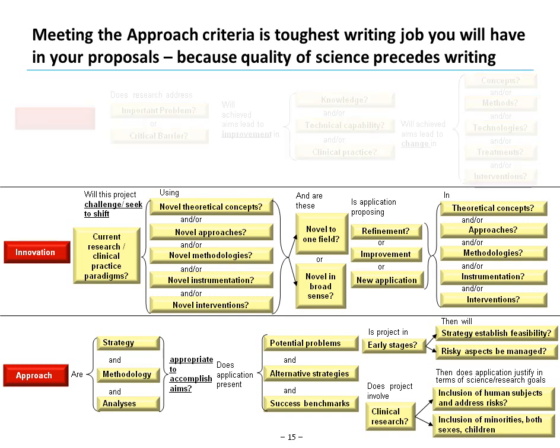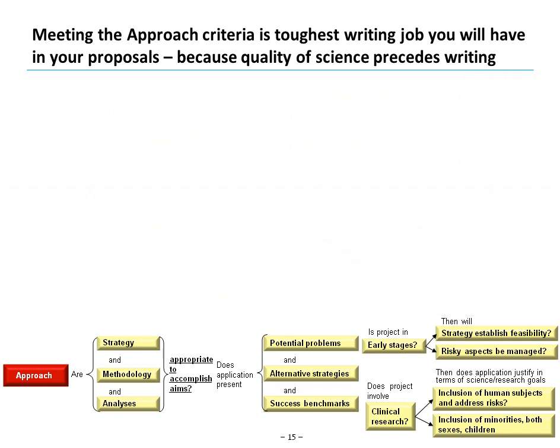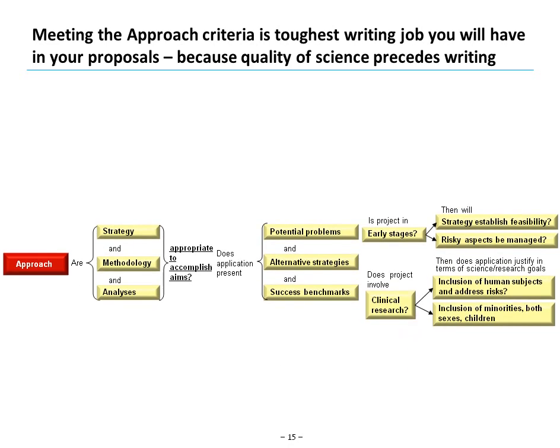Meeting the approach criteria is the toughest writing job you will have in your proposals — because the quality of the science precedes the writing. However, if your science is good, quality, and logical, the writing task can be helped by looking at these approach criteria and making sure, as you write, you address each of them in turn: the strategy, the methodology, your analyses, and whether you present potential problems, alternative strategies, and success benchmarks. If your science is good and you follow these criteria, your proposal is likely to be much more compelling.